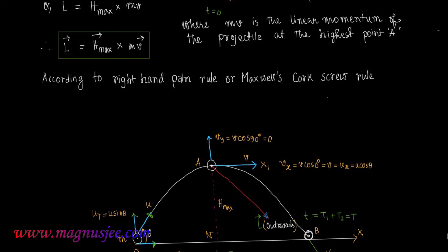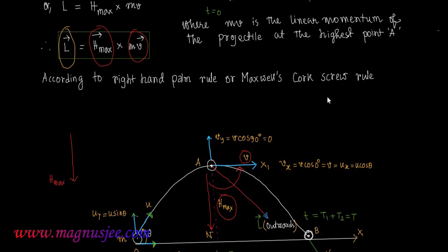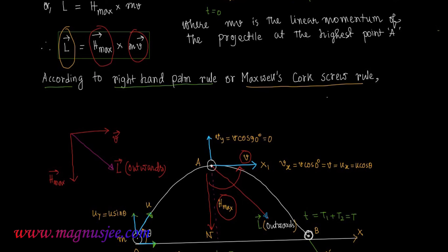In the expression of vector L, vector h_max comes first and then vector v. So in the diagram, if we move our four fingers parallel to h_max and then turn towards vector v, the angular momentum vector L acts outwards according to the right-hand palm rule or Maxwell Corkscrew rule.